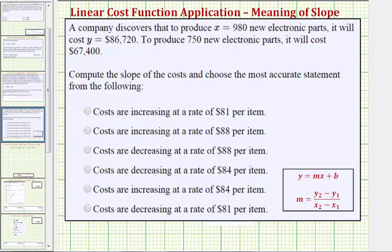To help us determine the slope, let's write the given information as ordered pairs. In general, an ordered pair would be (x, y). In this case, it's the number of electronic parts, comma the total cost.